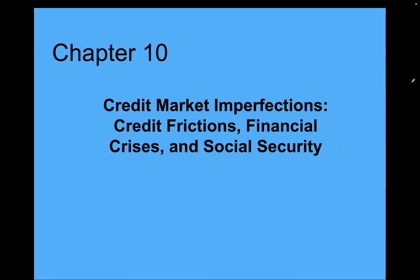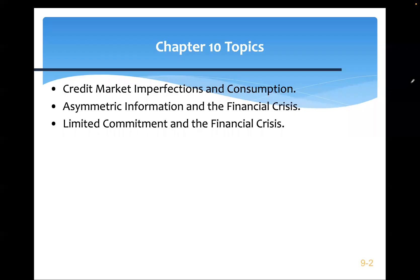Here's the roadmap of this chapter. We're going to talk about credit market imperfection, focusing on asymmetric information and limited commitment. I'll explain what these mean and how they affect the financial market, consumption, and saving decisions. At the end, we'll also look at social security, which is another type of market imperfection.